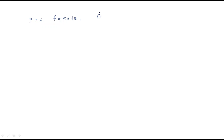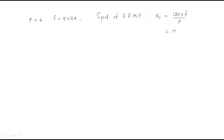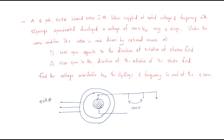First let us analyze the given data. He mentioned a 6-pole machine and frequency of 50 Hz. From this we can find the speed of the stator rotating magnetic field: Ns = 120F / P = 120 × 50 / 6 = 1000 rpm. So the stator field rotates at 1000 rpm.